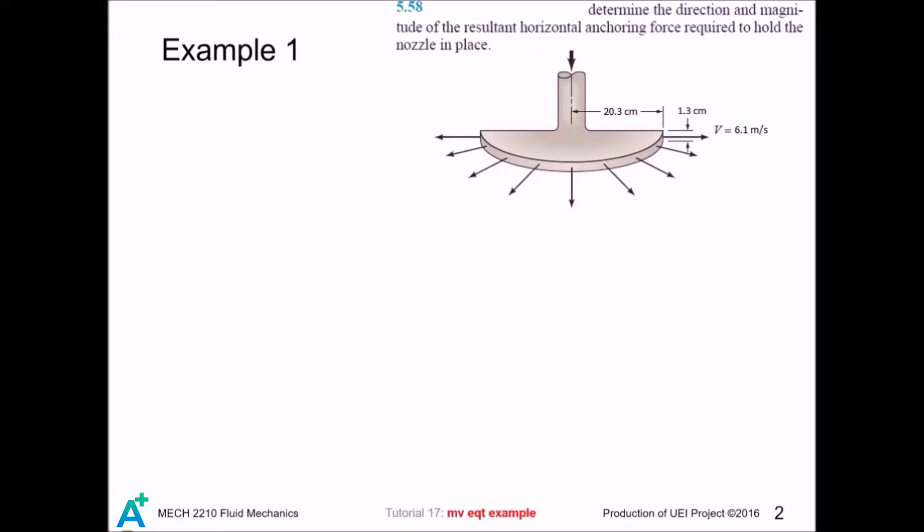Our first example is in fact a radially uniform velocity profile. So this example is not really the focus of today, but let's solve this problem anyway. Let's suppose the anchoring force is fx, fy, and then fz.